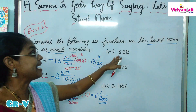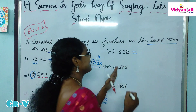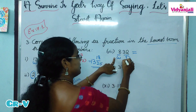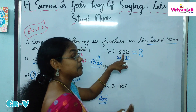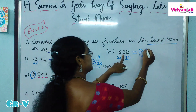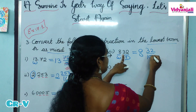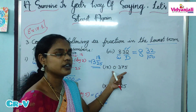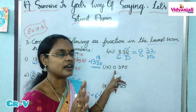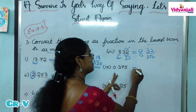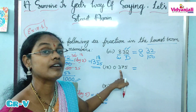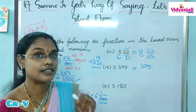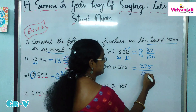Next: 8.32. How to write this in fractional form? Whole part is 8, decimal part is 32. So we write 8 and 32 by 100, because 32 has 2 digits so 1 after 2 zeros. For 0.375, there is no whole part so we only write the decimal part: 375 by 1000, since 375 has 3 digits so 1 after 3 zeros.